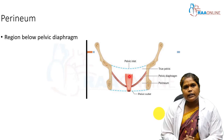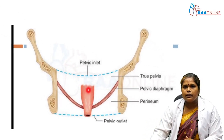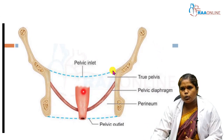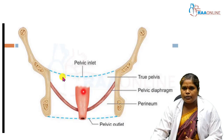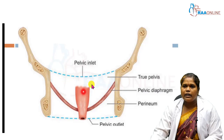Before going to the perineal membrane, what is the perineum? Here you can see a coronal section of a pelvis. The first blue color line will be the pelvic inlet. Below the pelvic inlet we have the pelvic cavity where we have the pelvic organs.